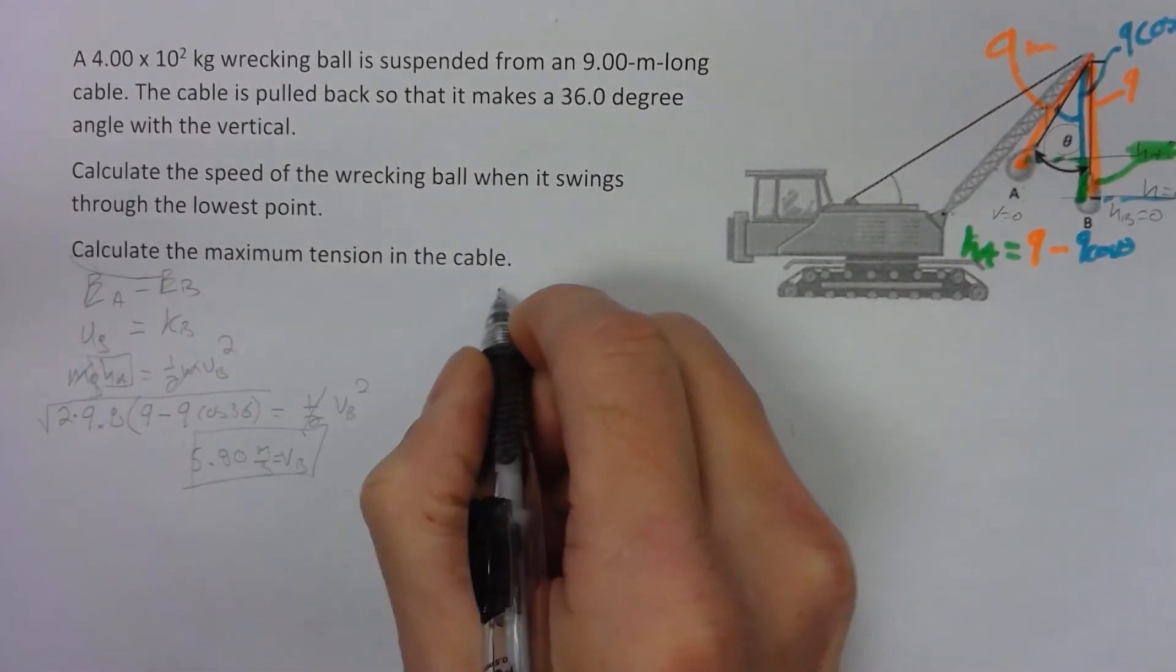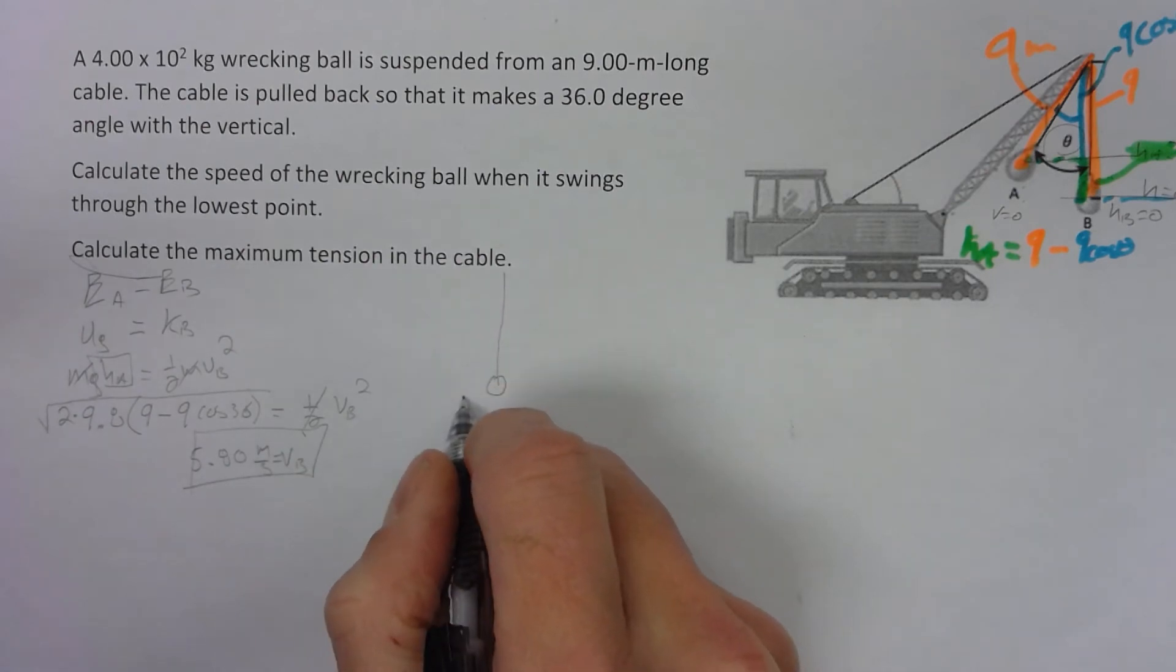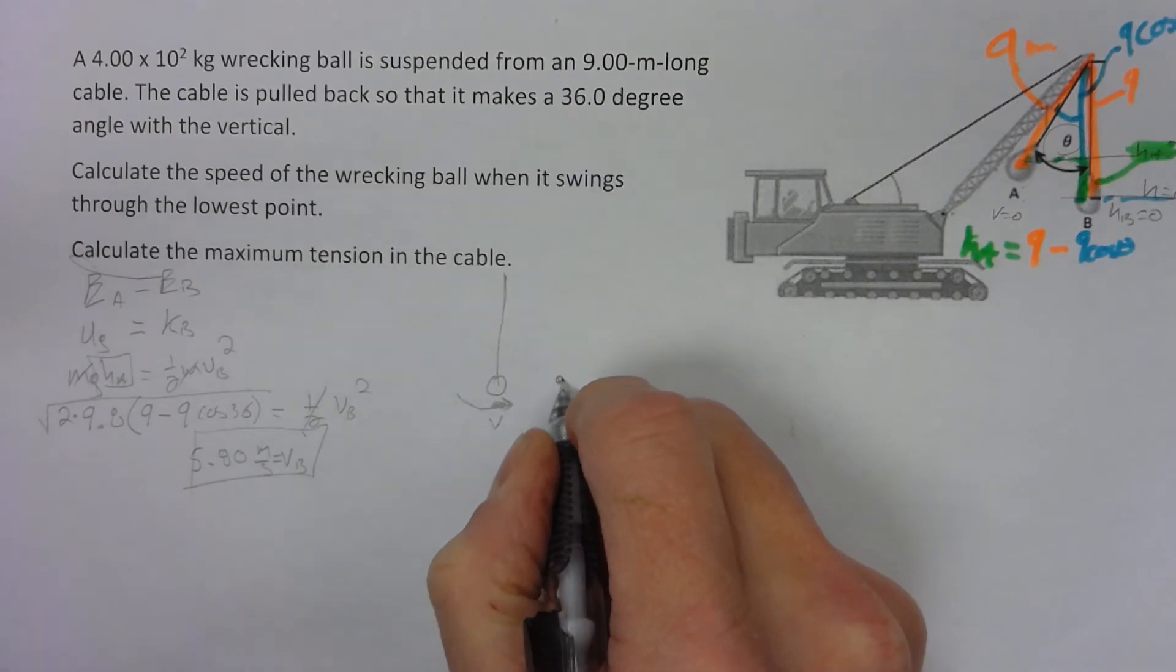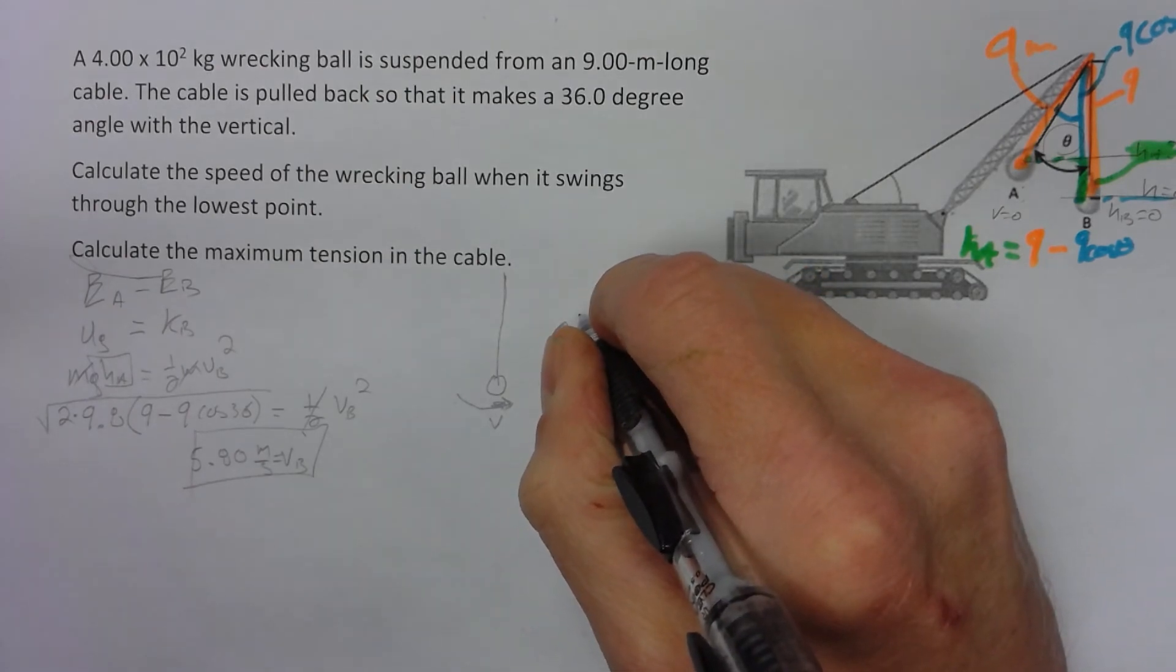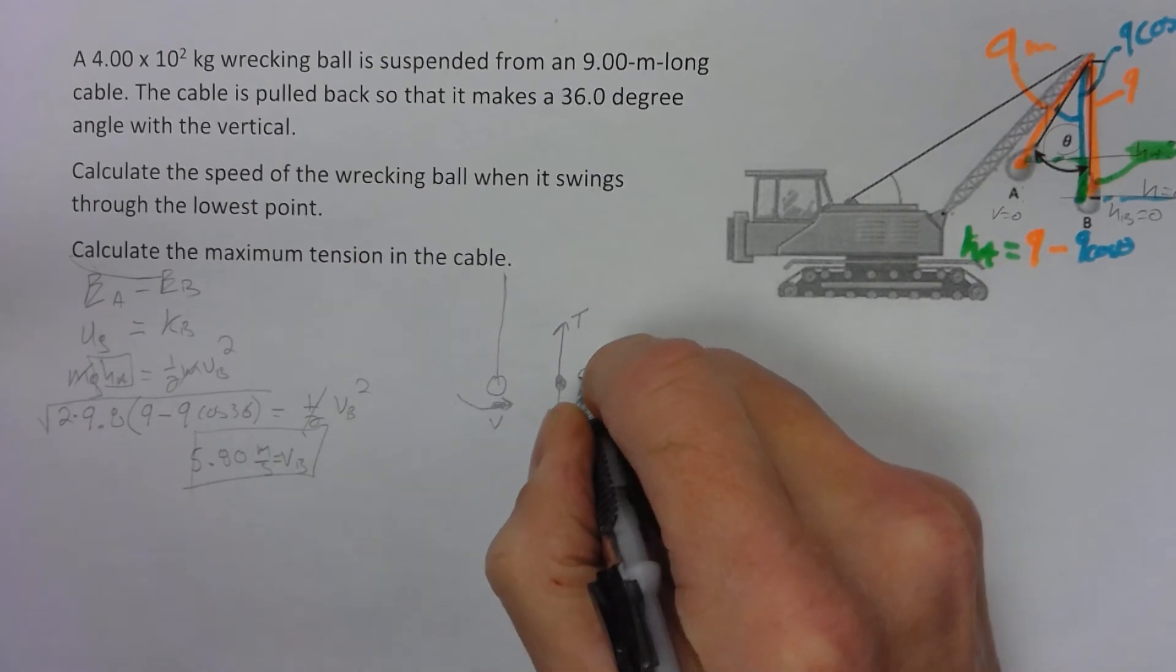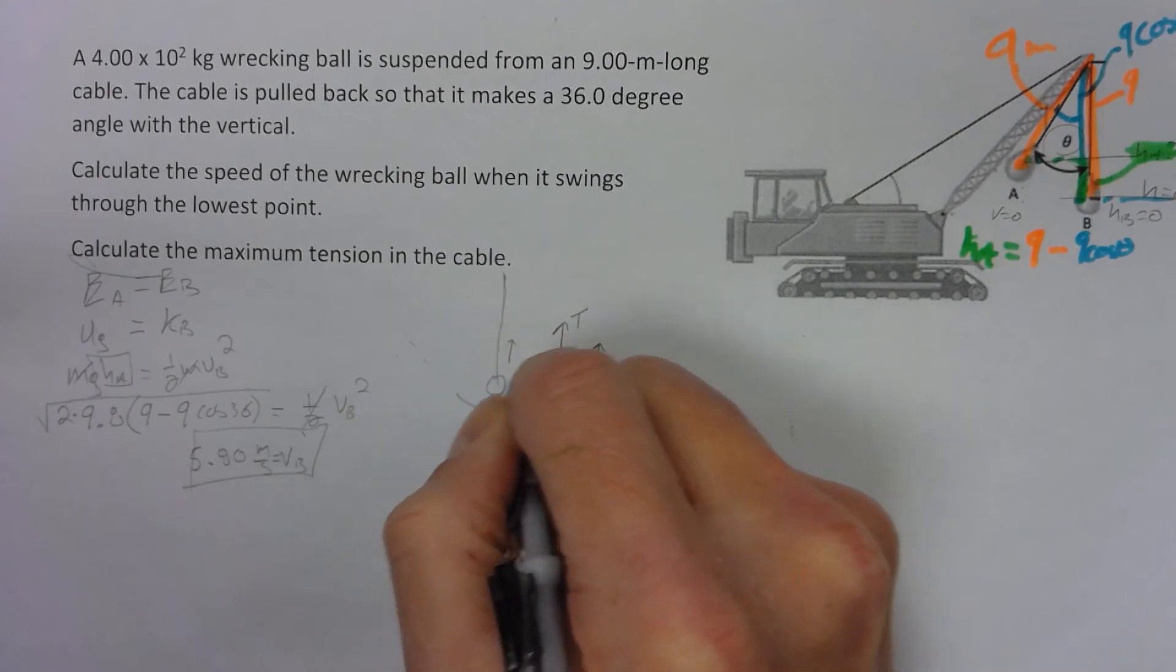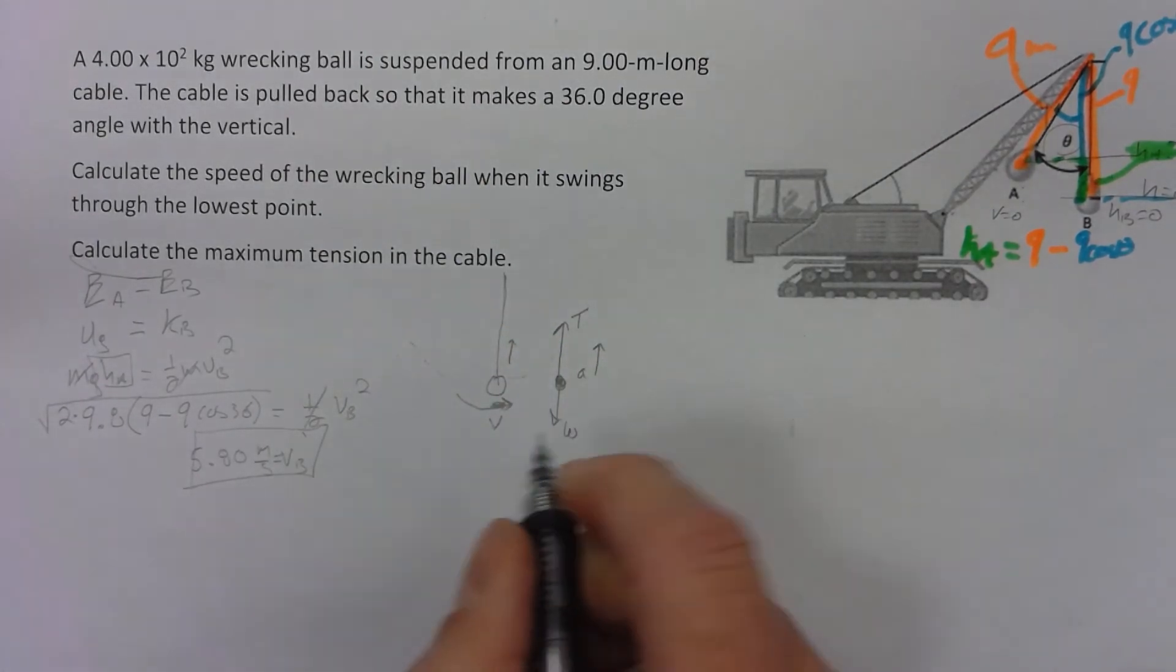Now calculate the maximum tension. When it's traveling through here, it's moving this way, got some velocity. At the bottom, we draw a free body diagram there. We've got the force of tension up, we've got weight down, and the acceleration is upward into the center of this circular path. So we have a centripetal acceleration there.